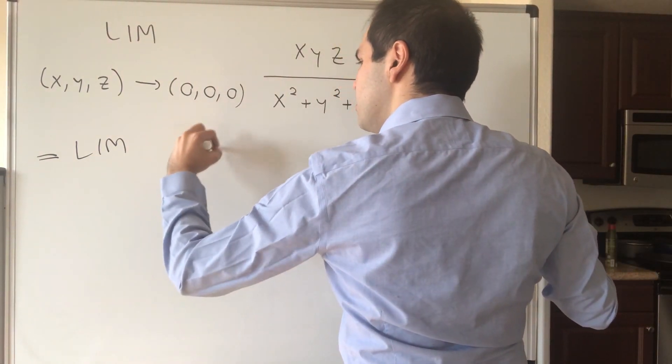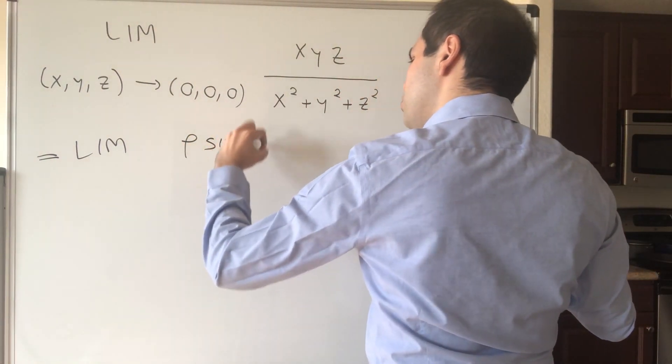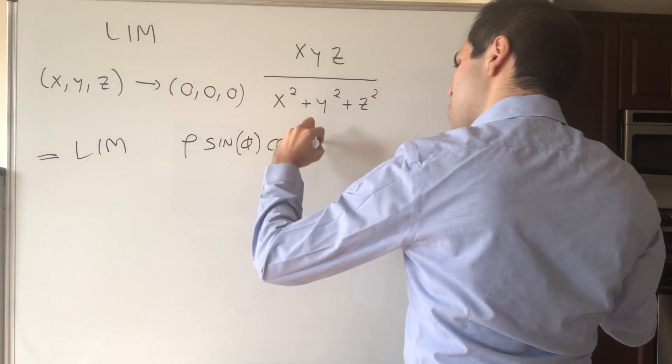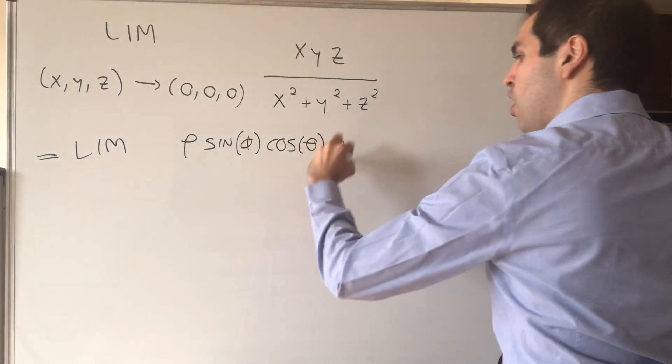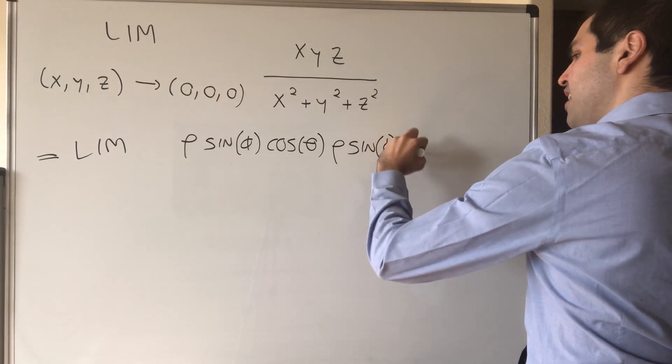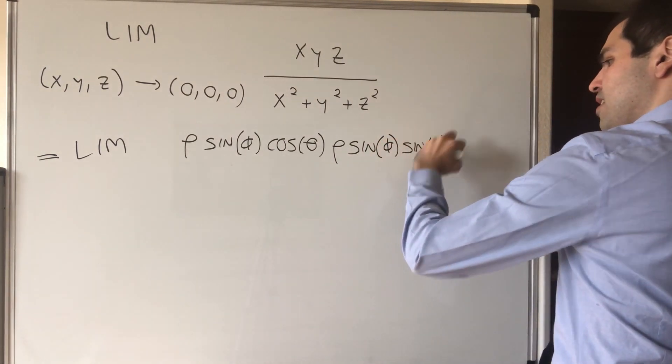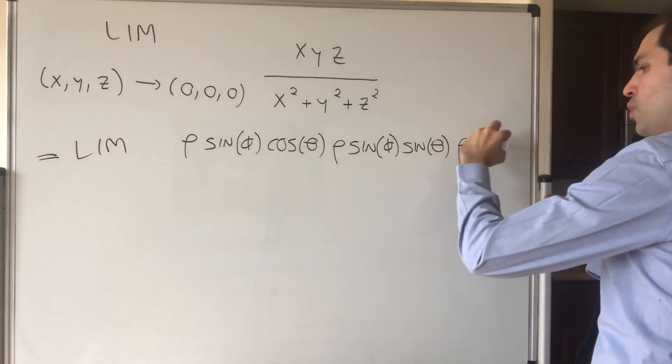X is just rho sine of phi cosine theta, Y is rho sine of phi sine of theta, and Z is just rho cosine phi.